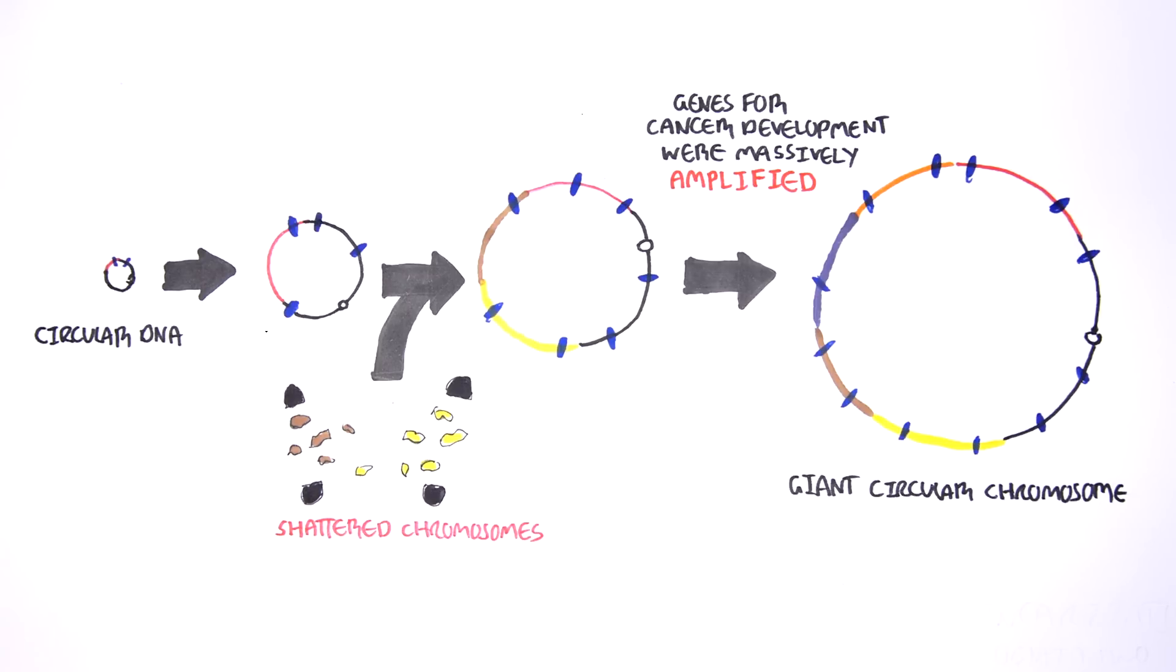When these genes are blocked in the laboratory, cancer cells die. So it would appear that cancer cells create a monster that assures their own survival.